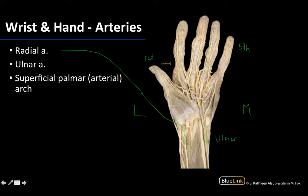The transverse carpal ligament has been transected here in order to show how the ulnar artery is getting into the hand area. You can see it going up into the more distal region to be the dominant supply for the superficial palmar arterial arch. The radial artery does send contributions there, but the ulnar artery is the dominant supply of the superficial palmar arch.